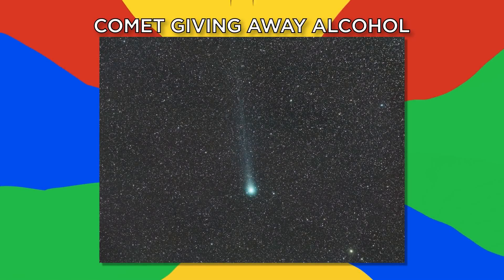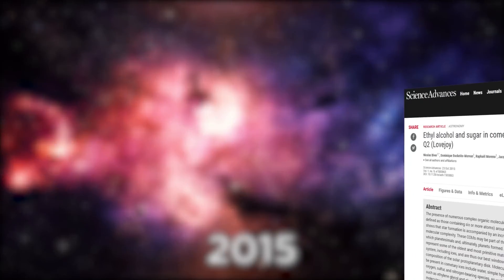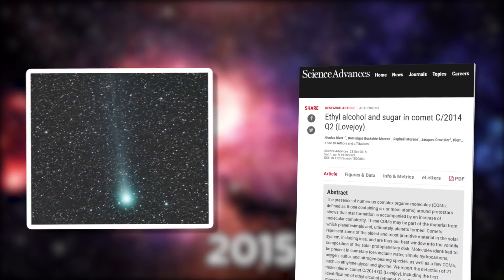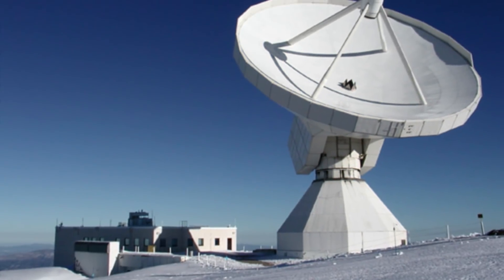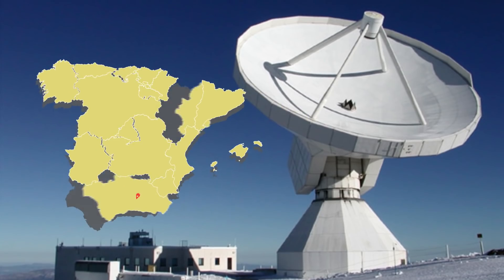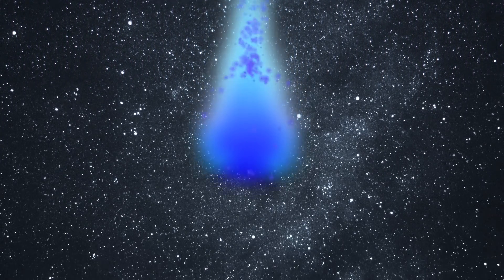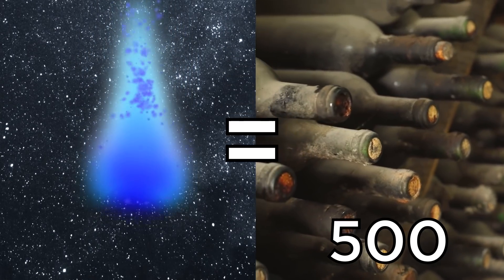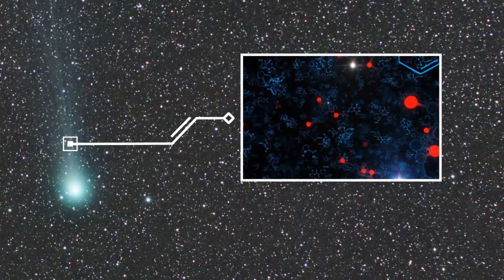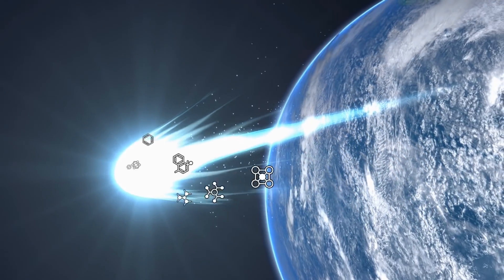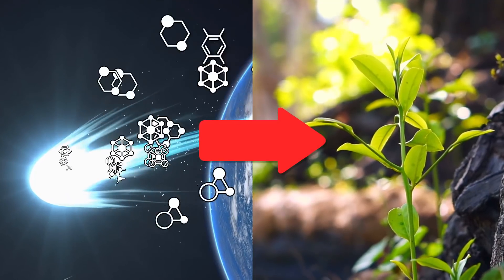Number six, comet giving away alcohol. In October 2015, a study published in Science Advances detailed how the comet Lovejoy released ethyl alcohol into space. Researchers observed the comet using a radio telescope at Pico Veleta, Spain. What they found was that the amount Lovejoy let loose per second at one point was equal to 500 bottles of wine. Moreover, the comet released 20 other organic molecules, which may help prove that comet impacts on Earth helped provide the molecules that would enable ancient life to flourish.